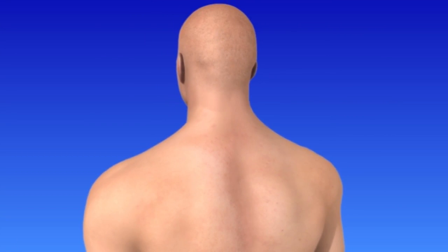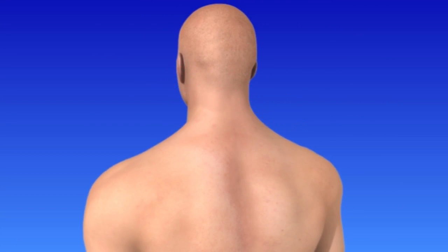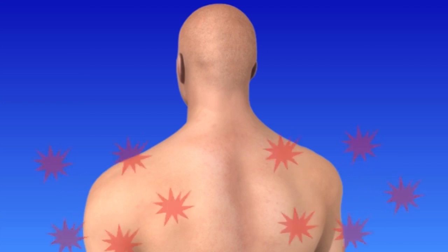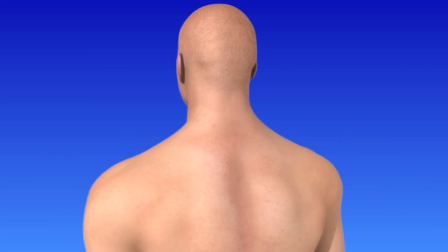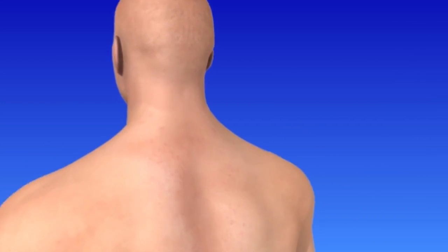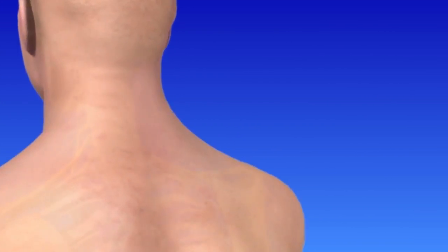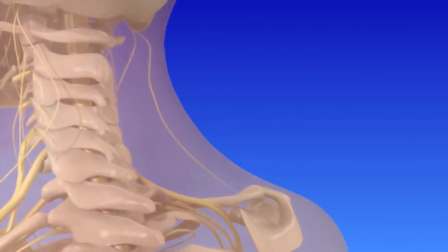Facet joint disease causes pain in the neck that may spread to the back of the head, your shoulders, upper arms, and rarely further down the arms. Powerful muscle spasms can be so strong that the facet joints are moved beyond the normal range.